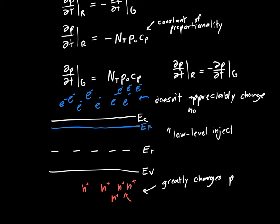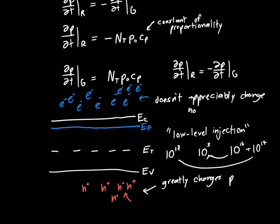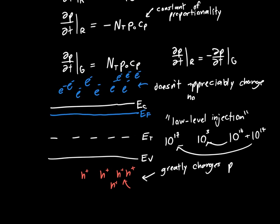Low-level injection says: if we have 10¹⁷ electrons per cubic centimeter at thermal equilibrium and 10² or 10³ holes, and we add 10¹⁴ to each, then 10¹⁷ doesn't change much — it's still about 10¹⁷. But 10³ changes to 10¹⁴. So this low-level injection condition makes life much, much easier for us.